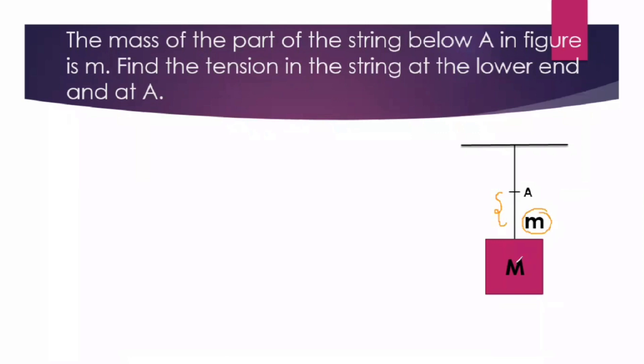Now we have to find out the tension at the lower end of the string. So let us call the lower end of the string point B. Let us draw the free body diagram for mass B. So here is our block, mass M.